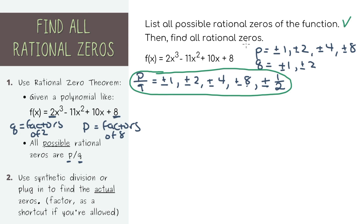Now we need to find all of the actual rational zeros. When we first started this problem, we didn't know anything about the rational zeros or what they might be. Now using the rational zero theorem, we've narrowed it down to 10 possible numbers. So for example, 1 may or may not be a zero — we don't know yet, but it's possible.